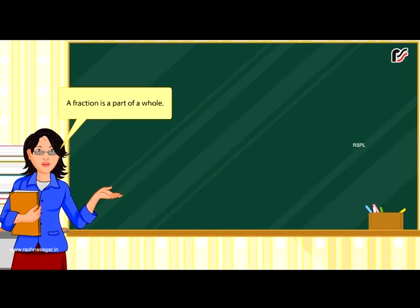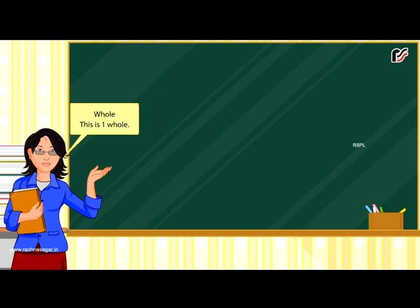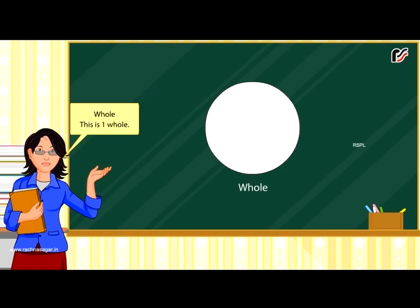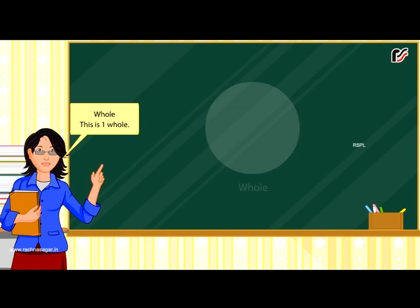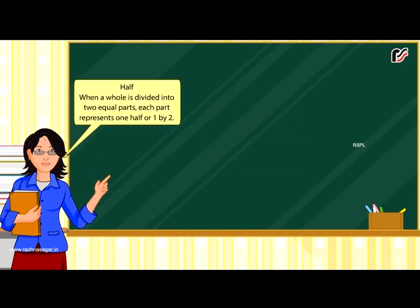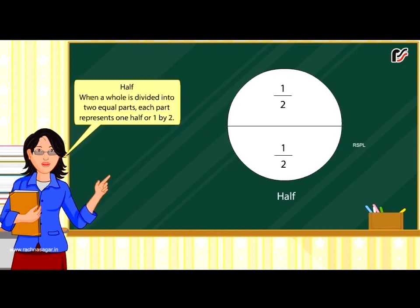A fraction is a part of a whole. This is one whole. When a whole is divided into two equal parts, each part represents one half or one by two.